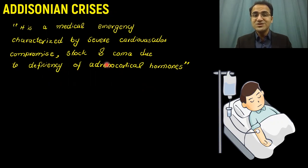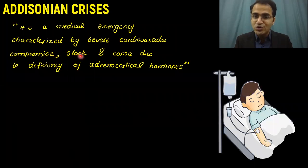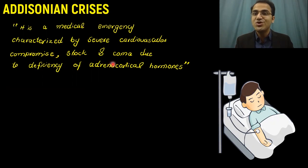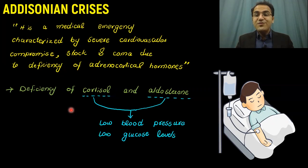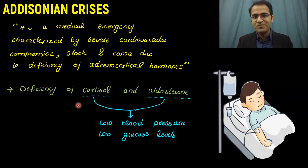First of all, what is Addisonian crisis? Addisonian crisis is basically a medical emergency characterized by severe cardiovascular compromise, shock, and coma due to deficiency of adrenocortical hormones. If you understand the functions of adrenocortical hormones, then understanding what happens in their deficiency would be much easier for you.